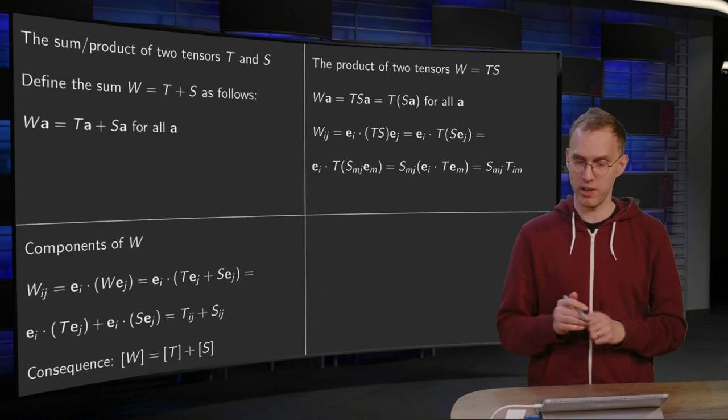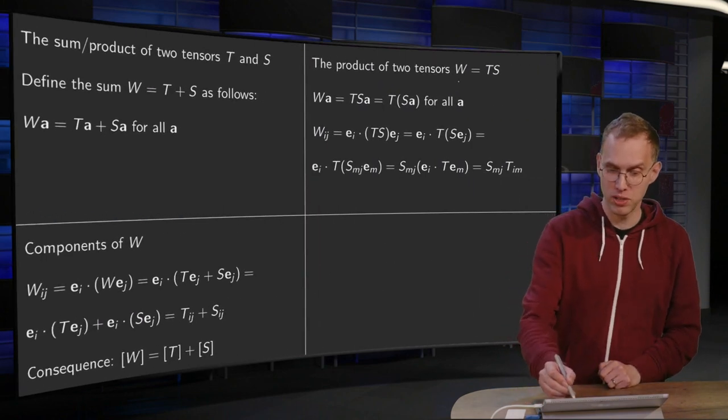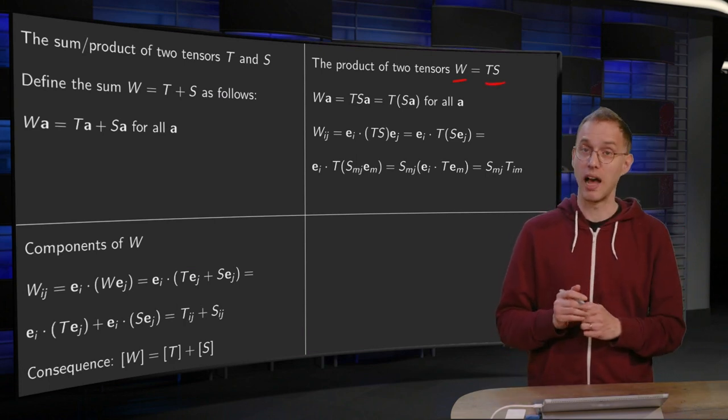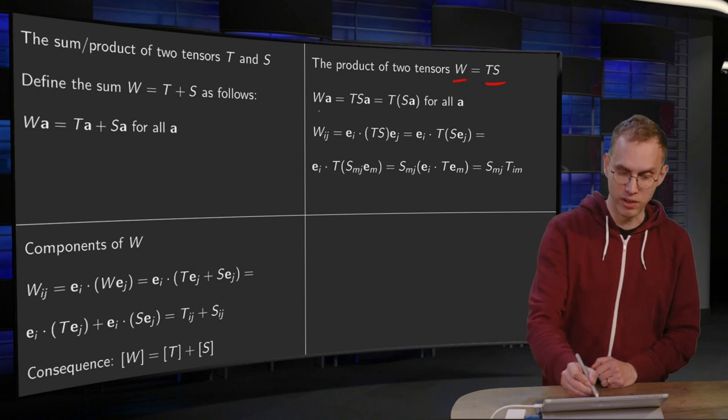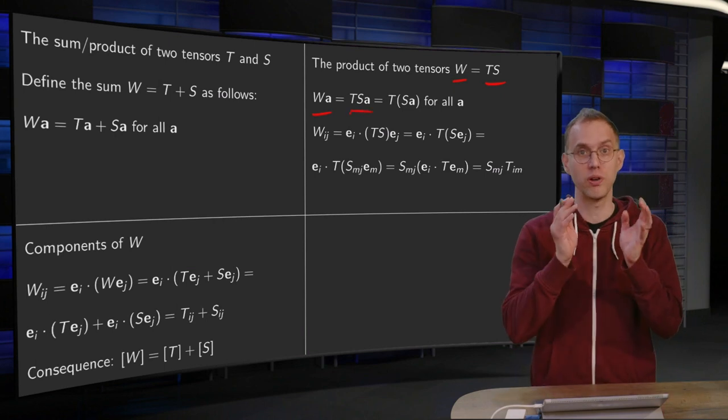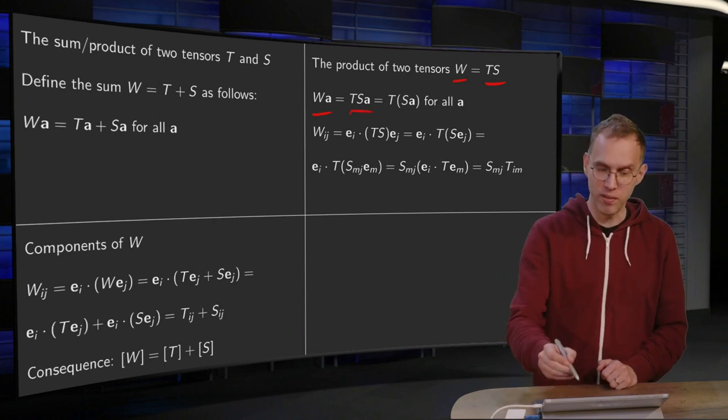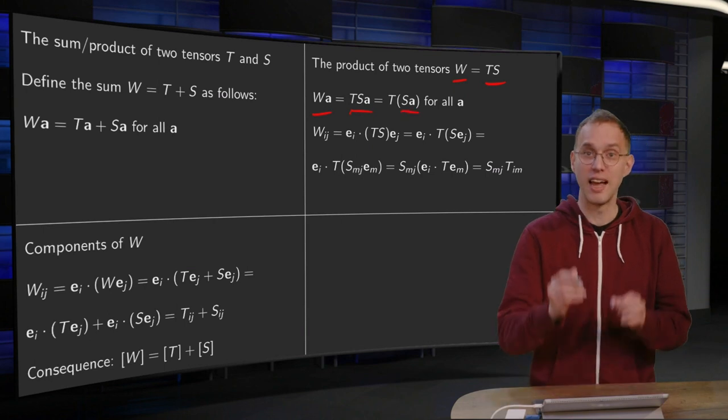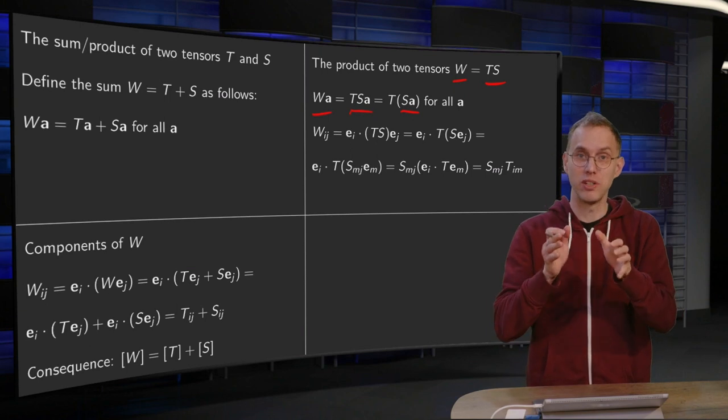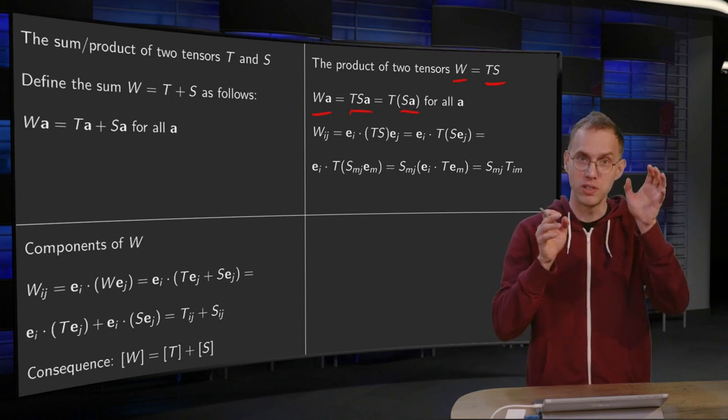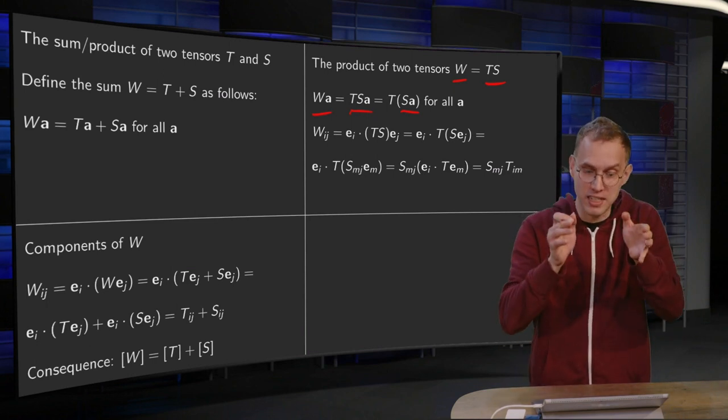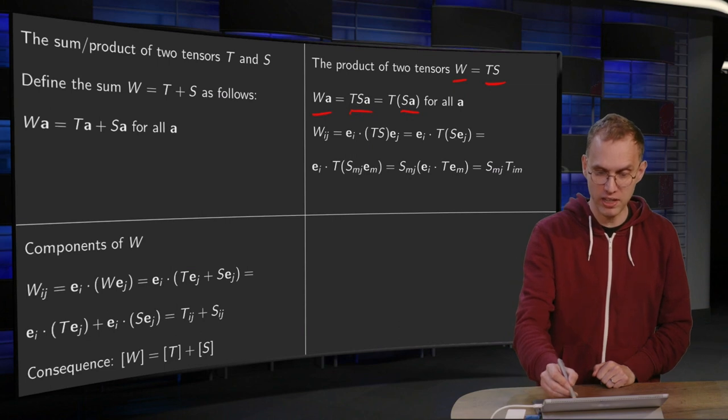What about the product? So if we take the product of two tensors, W equals T times S, let's do it in this order. How is it defined? The W working on some A is T times S working on some A. And how do we define this? We say compute first S times A. You can do that because S is just a tensor. And then on the result we compute T of the result. So we compute S times A first and then the T of S times A for all A. That is how it is defined.